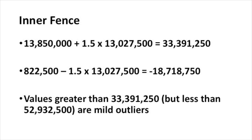To calculate the inner fence, we take the third quartile at 13.85 million followers and add 1.5 times the interquartile range. That gives us an inner fence of about 33 million followers. On the low end, the inner fence is 822,500 minus 1.5 times the interquartile range, which equals minus 18.7 million followers. Since the lowest number of followers you could have is zero, we're not going to have any observations that are outliers on the low end. But on the higher end, if a celebrity has between 33.3 million but less than 52.9 million followers, we'd call them mild outliers.